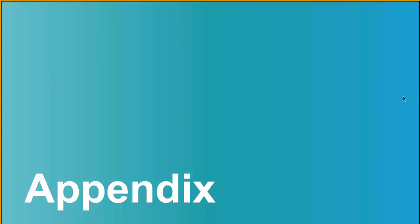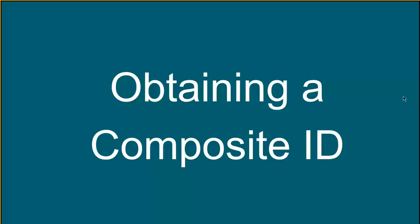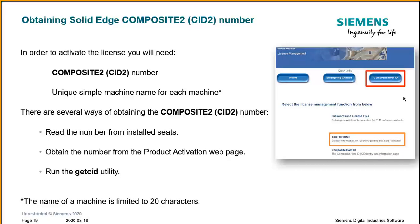Now let's talk about how to obtain the Composite 2 ID number — important information because, in addition to your WebKey account, you need this to successfully log in to the website. There are three different ways to access the Composite 2 number: you can read it from installed seats if you already have seats installed within your company; you can obtain it from the product activation web page; or you can run the getcid.exe utility located in the program directory under your Solid Edge installation.